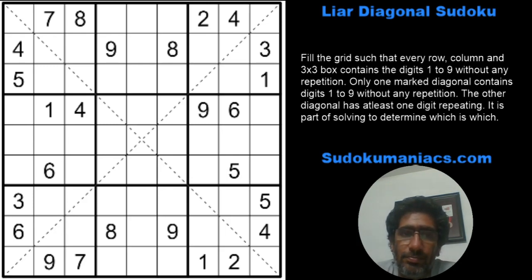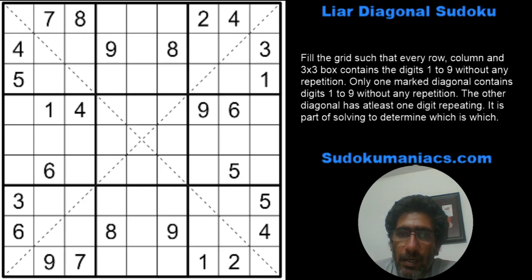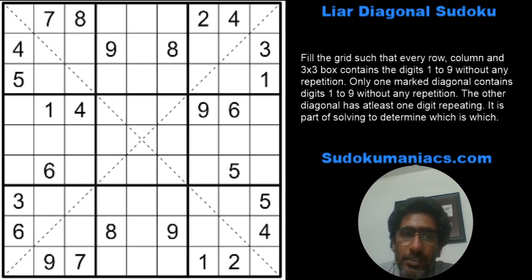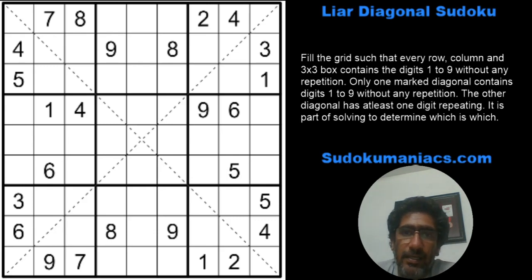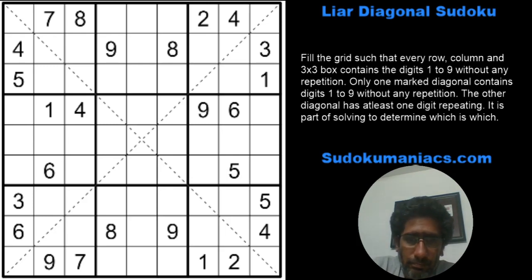So coming back to the puzzle — this is known as a Liar Diagonal Sudoku. The rules of classic Sudoku apply. Of the two main marked diagonals, only one will have exactly one to nine digits without any repetition, whereas the other diagonal would have at least one digit repeating. The keyword here is 'at least one digit' — it's not necessary that only one digit repeats, and it can repeat more than twice.